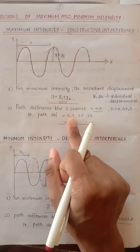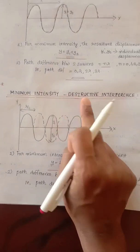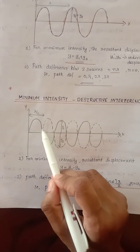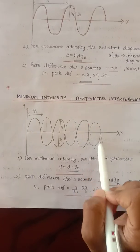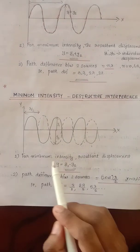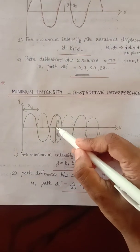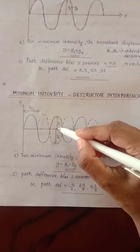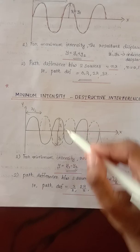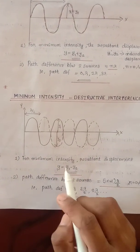Minimum intensity is known as destructive interference. How do we get it? The first wave and the second wave are combined such that the resultant displacement Y is equal to y1 minus y2, because the displacements are in opposite directions. Y1 is the first wave and Y2 is the second wave — they are in opposite directions, so Y equals y1 minus y2.